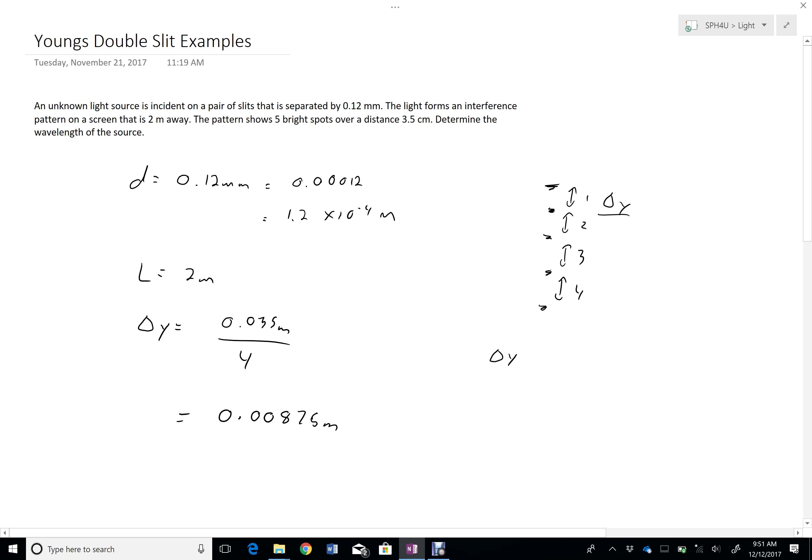So the formula here is delta Y equals lambda L over D. So 0.00875 equals lambda times 2 divided by 0.00012.